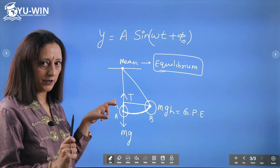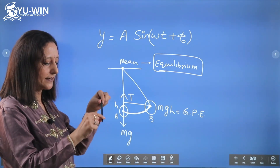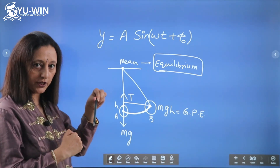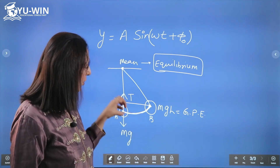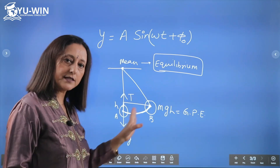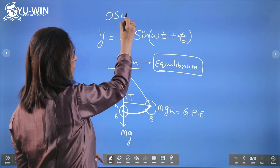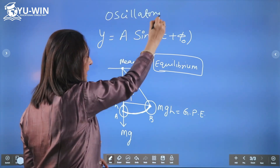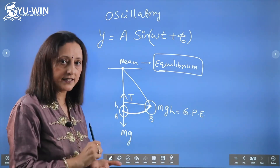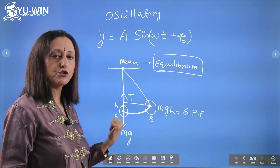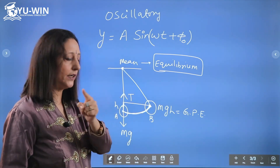Why does it come back to mean position? If I take this pen, displace it and release it, it does not come back — why? For a pendulum with a string and bob, when you displace the bob and release it, it comes back to mean position. For any body to oscillate, the first requirement is that there must be a force directed towards the mean position — opposite to the direction of displacement. If displacement is in the positive direction, there must be a force acting opposite to the displacement.